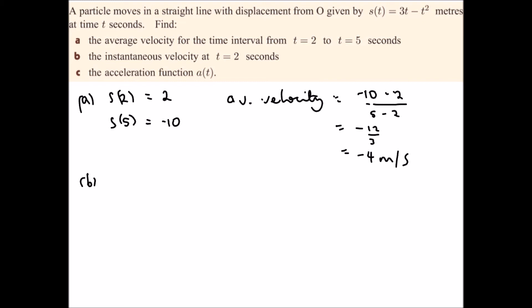Now part b, we want the instantaneous velocity. So therefore v(t) is equal to s'(t), the rate of change of displacement. So if we differentiate the s function, we will get 3 take 2t.